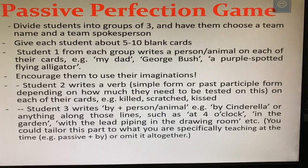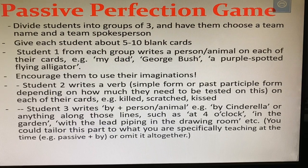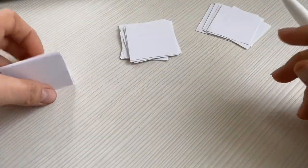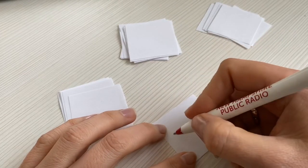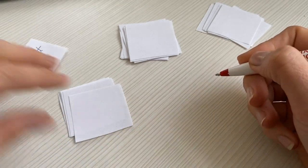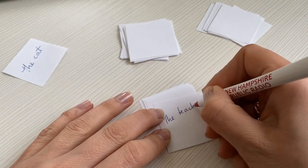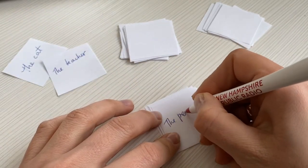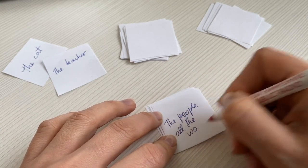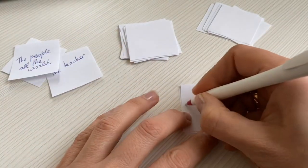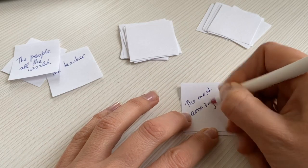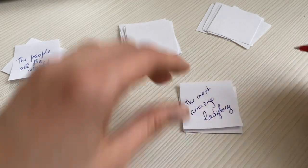Student two writes a verb — the past participle form — depending on what tense you want to practice. I would advise using a specific tense, such as present perfect passive, or past simple. Student three writes 'by a person' or 'by an animal' — for example, 'by Cinderella,' or a place like 'in the garden.' You use your imagination. The activity is extremely interesting — you can actually try it and use it in your classroom.